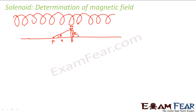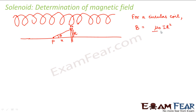Now we will apply what we know from our previous lessons. For a circular coil we derived the magnetic field: for a circular coil at any point P which is at a distance x from the circular coil, the strength of magnetic field is μ₀iR² divided by 2 into (R² + x²) to the power 3/2.